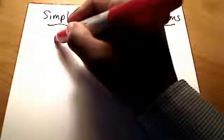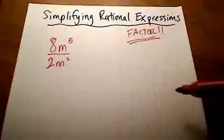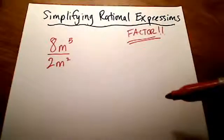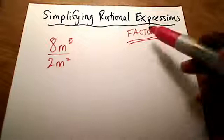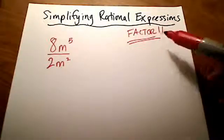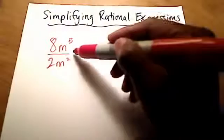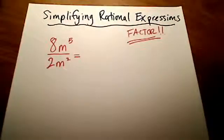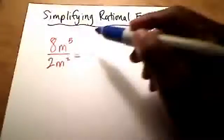For example, if you had something like 8m to the fifth over 2m squared, and we had to simplify this rational expression — what I'm going to show you first is something called factoring, and I'm going to show you why we factor as well. I'm going to rewrite both the numerator and the denominator. Watch how I rewrite this.